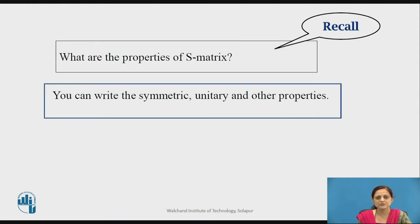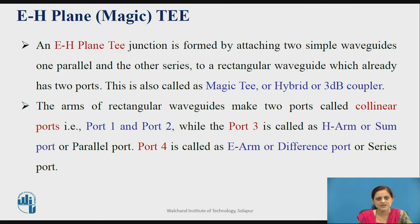Before going to start the microwave component Magic T junction, you can pause the video here for a second and recall what are the properties of S matrix. Now, what is Magic T junction? Magic T junction is also called as E-H plane T junction. It is formed by attaching two simple waveguides — one parallel and the other in series — to a rectangular waveguide which already has two ports. This is called as Magic T junction; it is also known as a hybrid or 3 dB coupler.